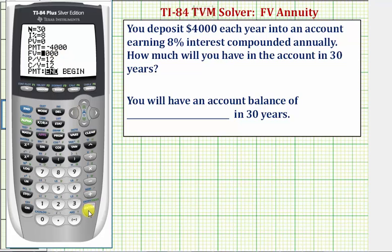We press Enter. P/Y stands for payments per year. We're paying $4,000 once each year, so payments per year is equal to 1. Press Enter. This automatically changes the compounds per year to 1, which in this case is correct because the interest is compounded annually. Remember, if we're not told how the interest is compounded, we assume it's the same as the number of payments per year.